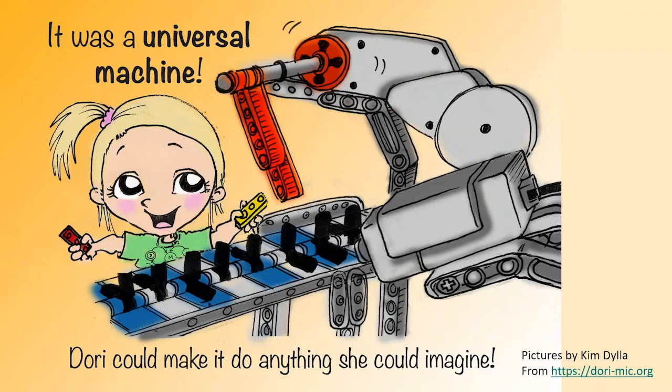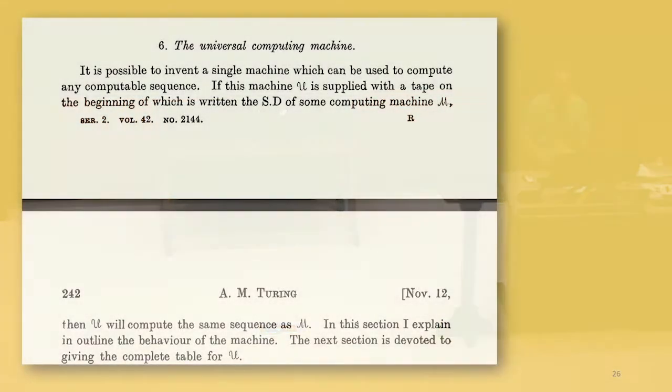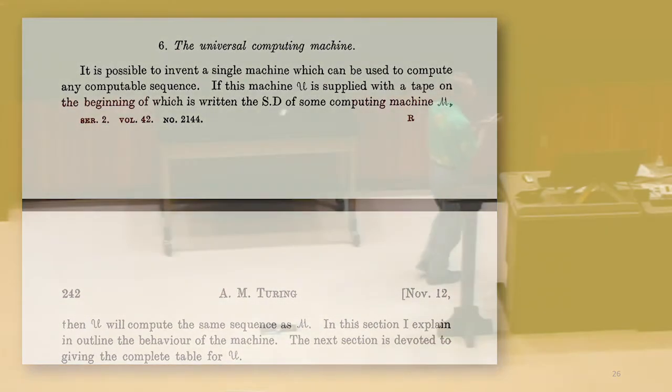And this is what Turing did. So I've been very informal with saying, once we can make decisions, once we have memory, once we can do these things, we can compute anything, we can simulate any Turing machine. That wasn't good enough. Definitely if you wanted to make a really strong argument about this, you had to show exactly how to build one.